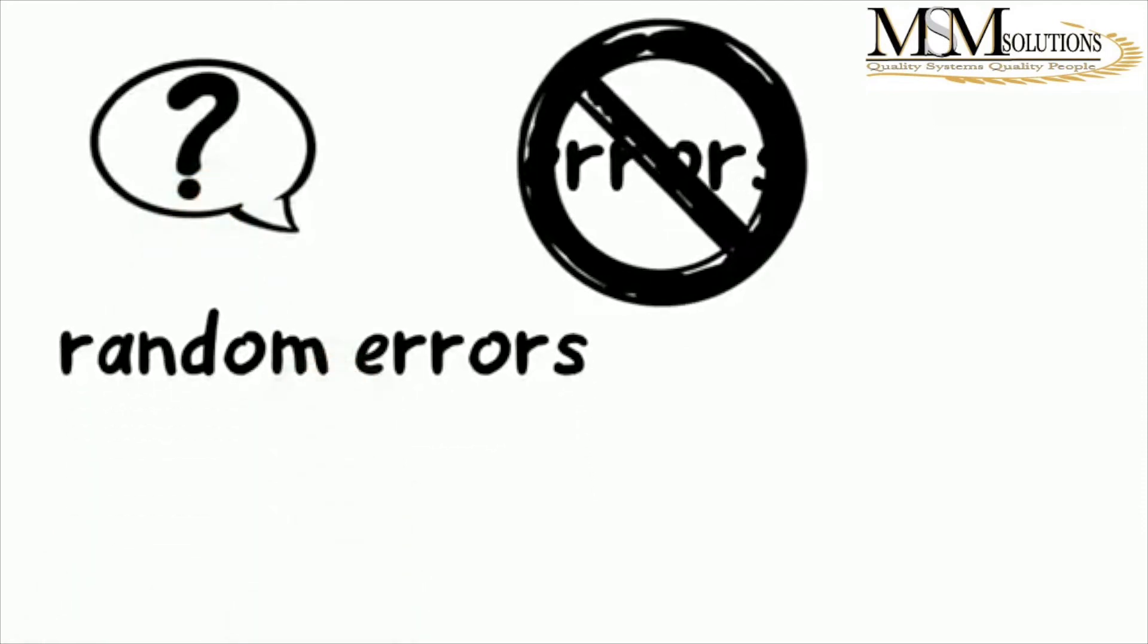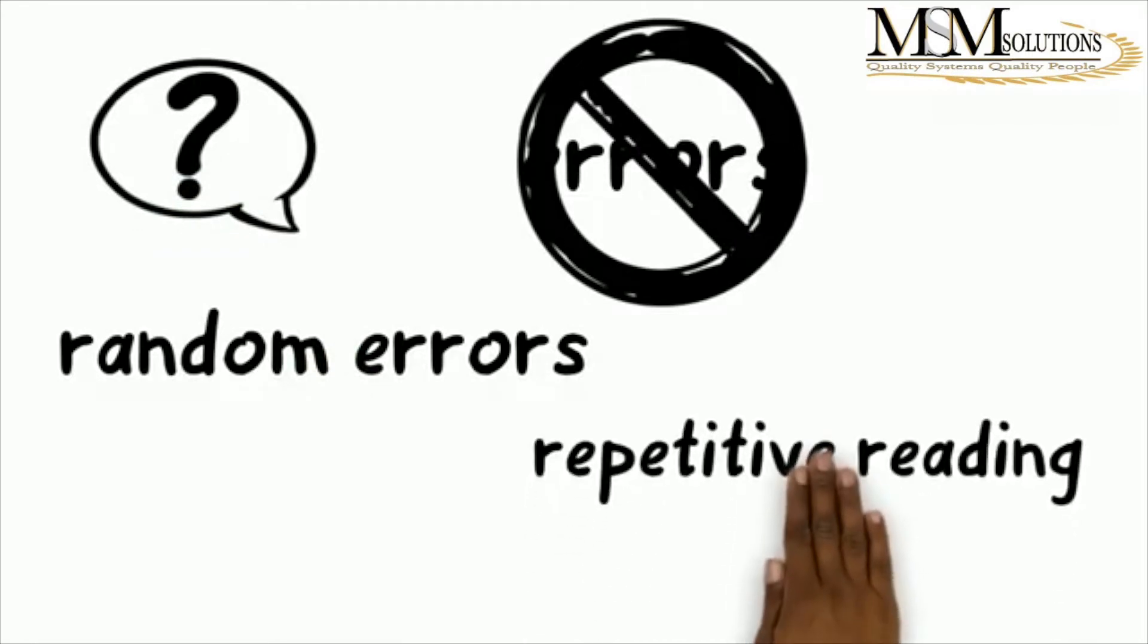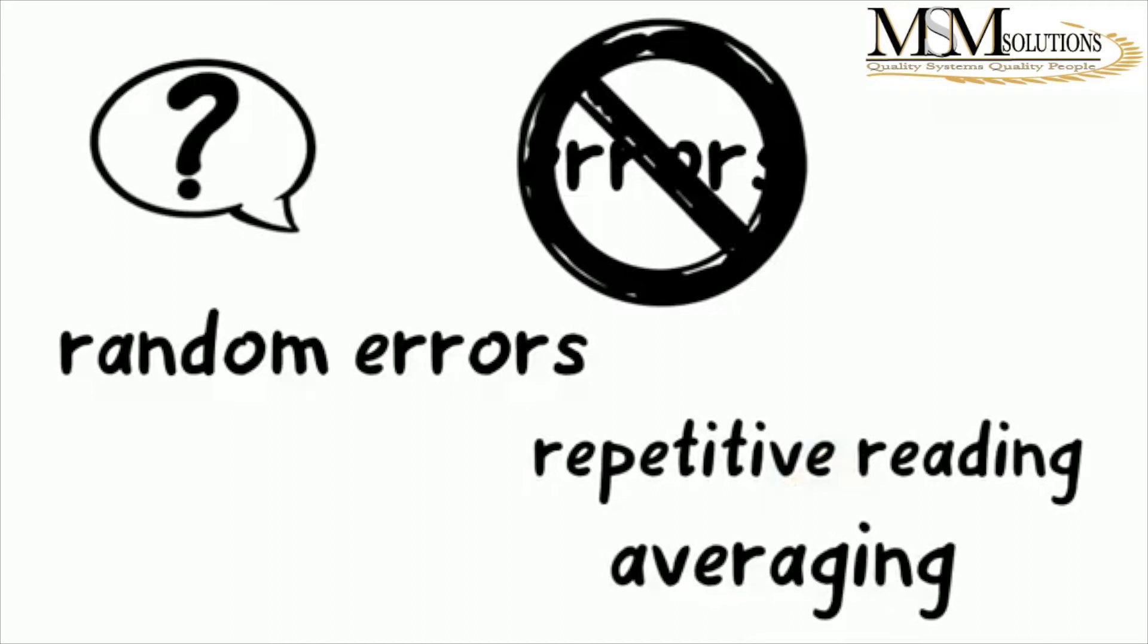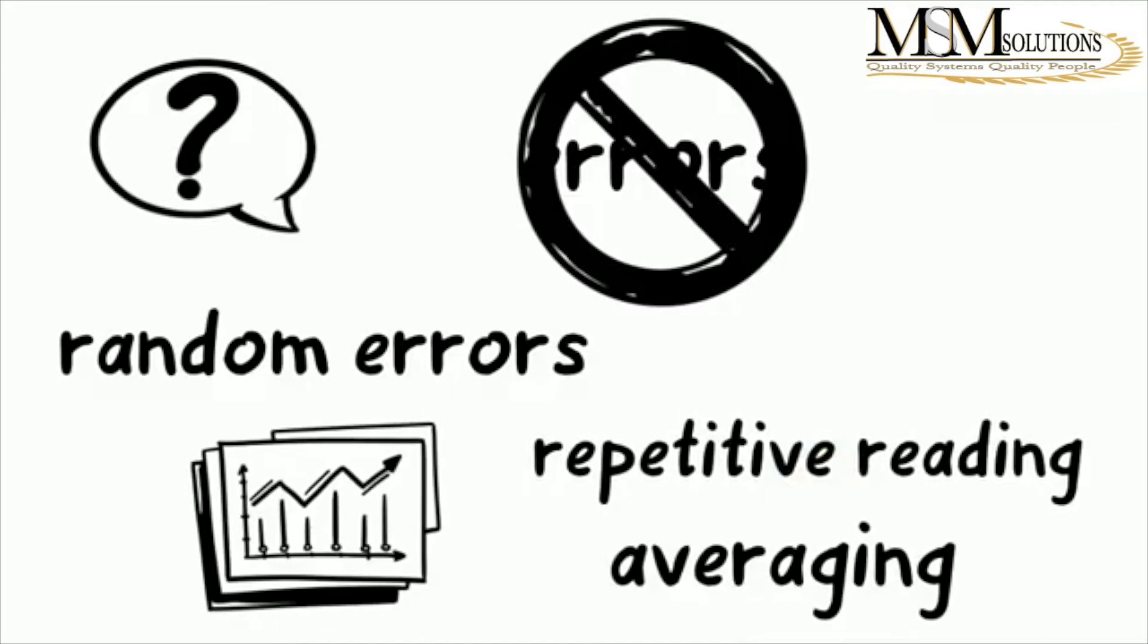Starting with random errors, remember these are unpredictable by nature. The best way is by repetitive reading, repetitive measurements, and then averaging the results, almost trying to zero the error.